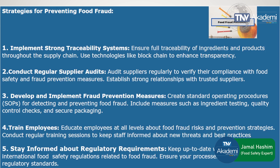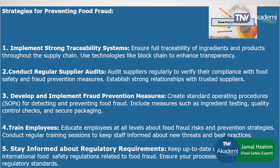Strategies to prevent food fraud: number one, implement strong traceability systems — ensure full traceability of ingredients and products throughout the supply chain, using technologies like blockchain to enhance transparency. Number two, conduct regular supplier audits — audit suppliers regularly to verify their compliance with food safety and fraud prevention measures, and establish strong relationships with trusted suppliers. Number three, develop and implement food fraud prevention measures — create standard operating procedures (SOPs) for detecting and preventing food fraud, including ingredient testing, quality control checks, and secure packaging.